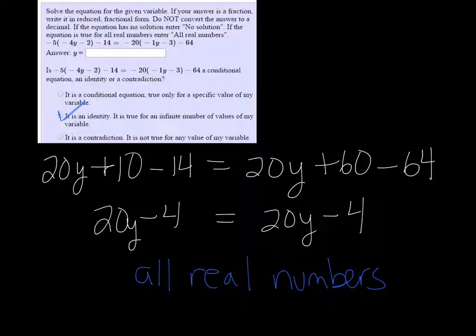So just note that the two sides have to be exactly the same for that to work. If one of these had been plus y instead of minus y, then it would turn into a contradiction. Or I should say plus 4 instead of minus 4, not the y.